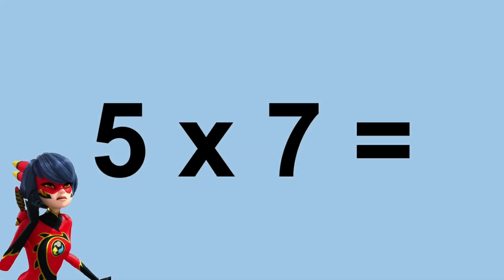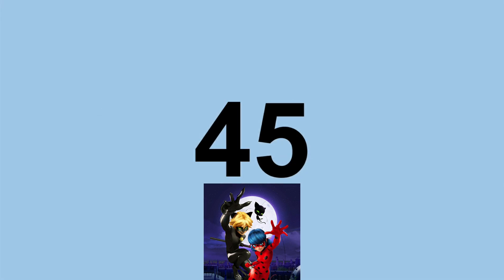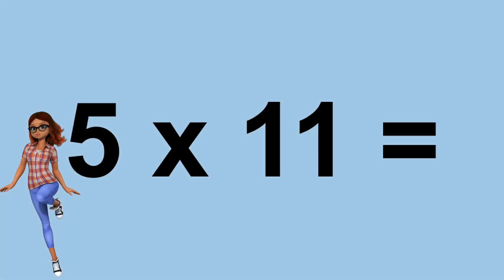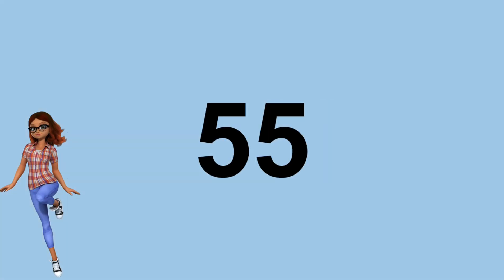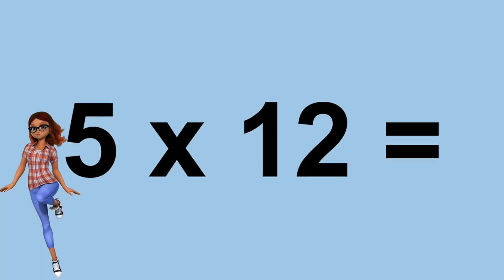Five times seven equals thirty-five. Five times eight equals forty. Five times nine equals forty-five. Five times ten equals fifty. Five times eleven equals fifty-five. Five times twelve equals sixty.